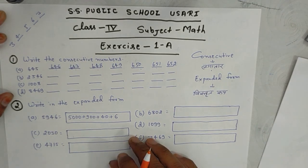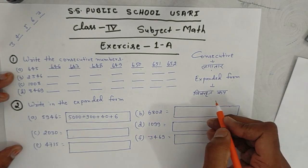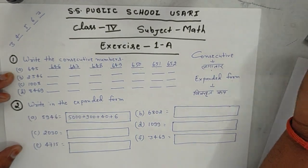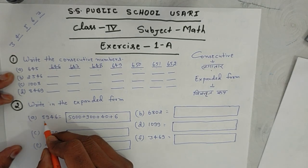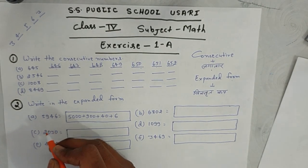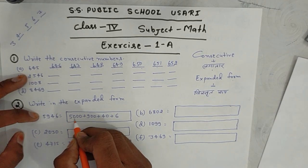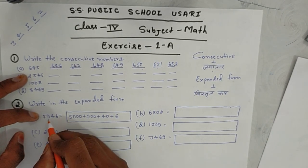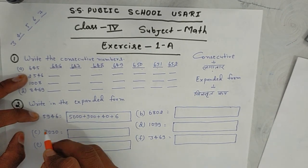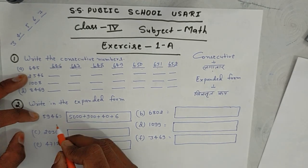Next we will write in expanded form. Expanded form means breaking a number into its place values. Here we have 5,946. We write it as 5,000, then 900, then 40, then 6.